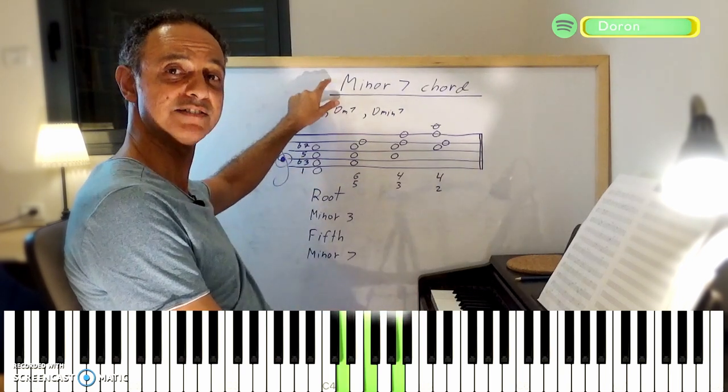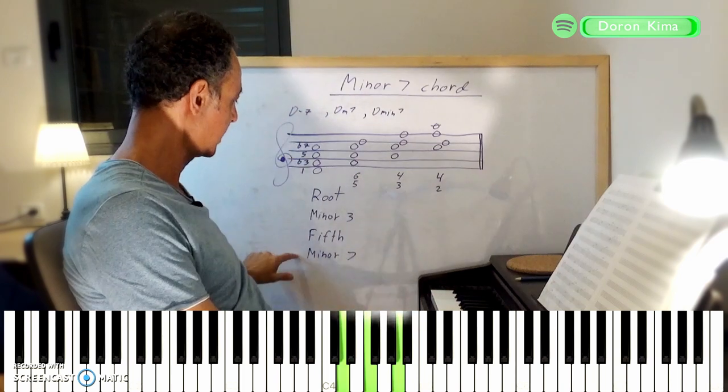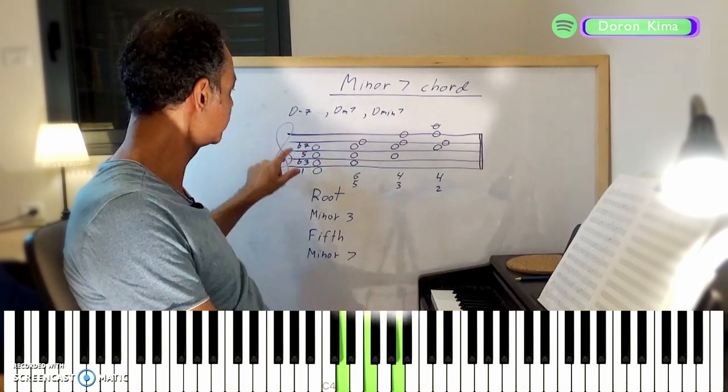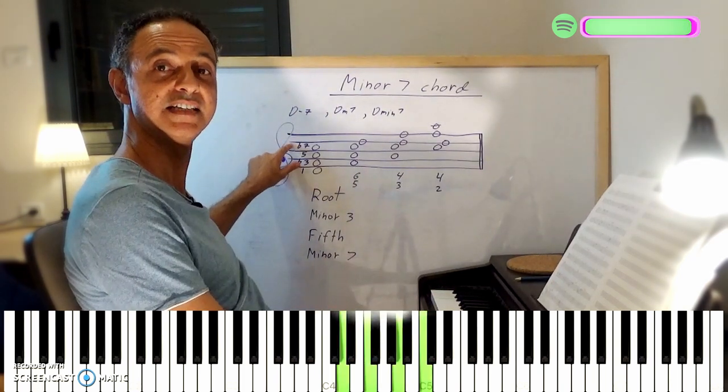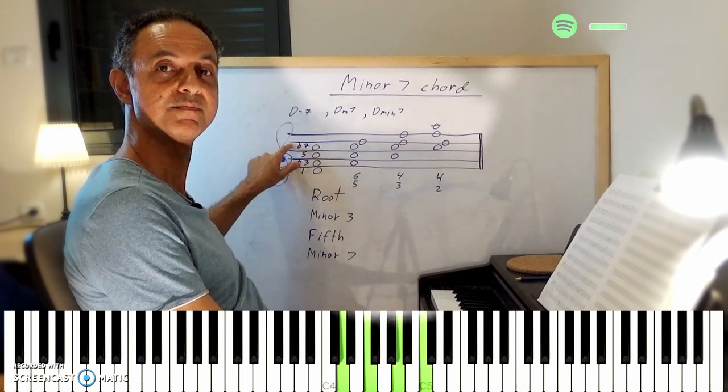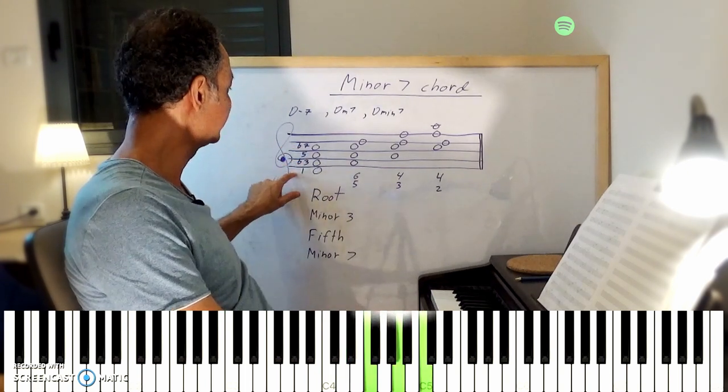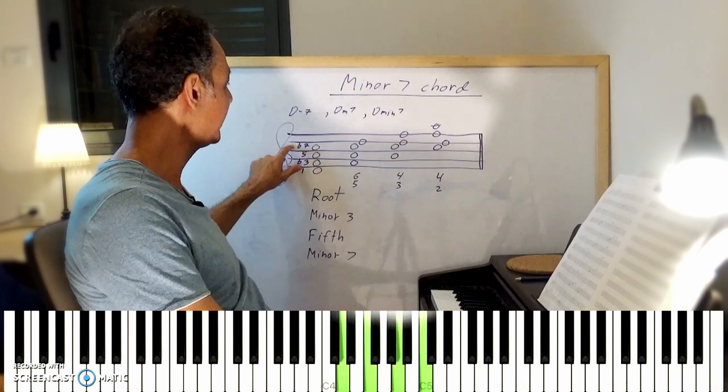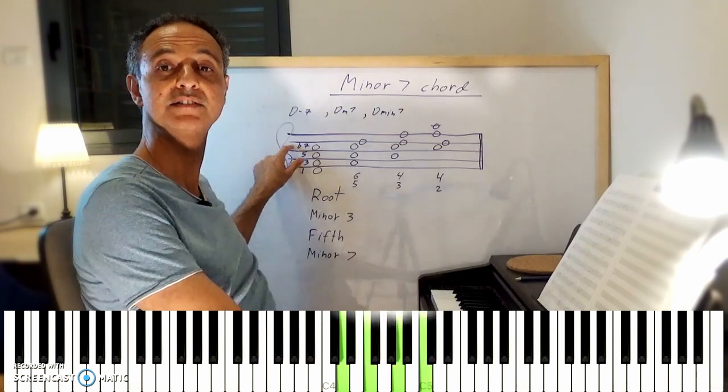And we have a minor 7th up from the root, which is the note C. So we have D, F, A and C. This is D minor 7 chord.